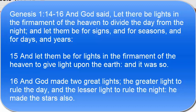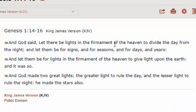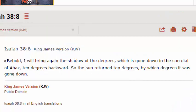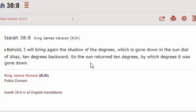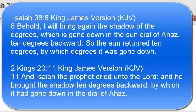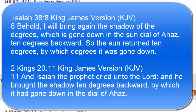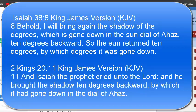So how did they use the stars, the moon, and the sun to track time? When we look in Isaiah chapter 38 and verse 8, we see that they actually had sundials back in the day. King Ahaz had a sundial. The same story is told in 2 Kings chapter 20 and verse 11, where it's just called the dial of Ahaz.